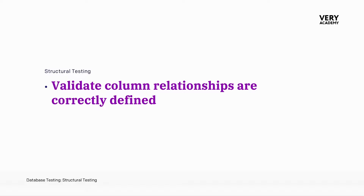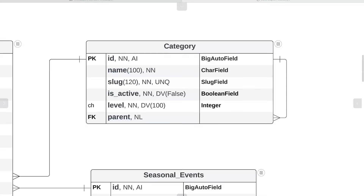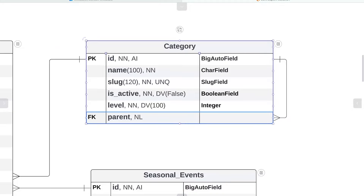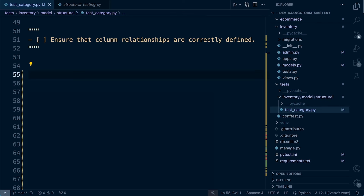In this tutorial we're going to build a set of tests which will validate column relationships, ensuring that they are correctly defined within our specific model. Our current focus is the category model — it does have a foreign key, which is the parent field. So we're going to create a set of tests to ensure that the category relationship, in this case just this foreign key, is correctly defined within the model.